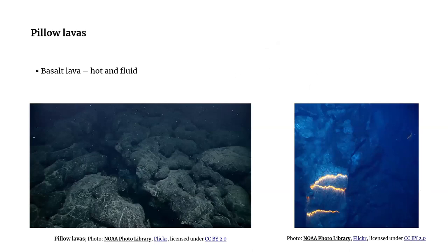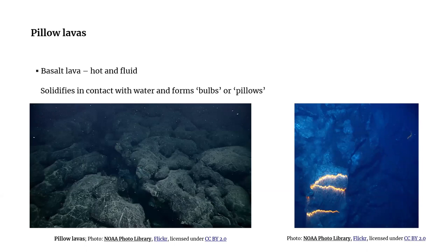Basalt lava is one of the hottest and most fluid types of lavas that often erupts at the bottom of the ocean. As it comes into contact with very cold water, it solidifies into a distinctive palm or pillow shape. While the outer layer solidifies, the core continues to flow, eventually creating a chain of pillows.